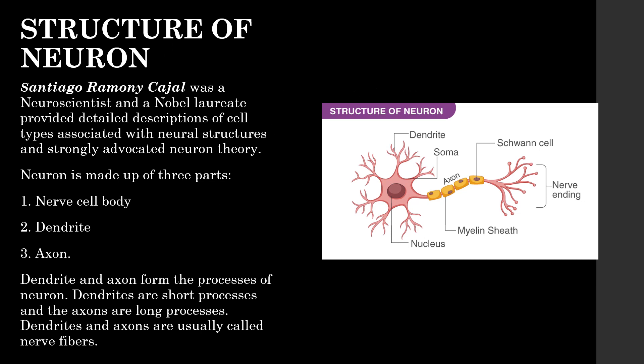Structure of Neurons. Santiago Ramón y Cajal was a neuroscientist and Nobel laureate who provided a detailed description of cell types associated with neural structure and strongly advocated the neuron theory. A neuron is made up of three parts: the nerve cell body, dendrites, and axons.